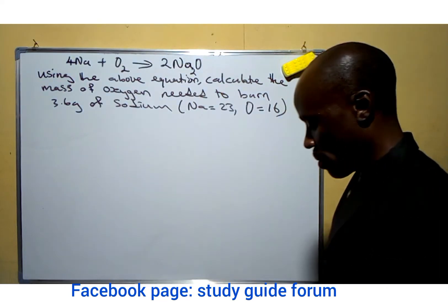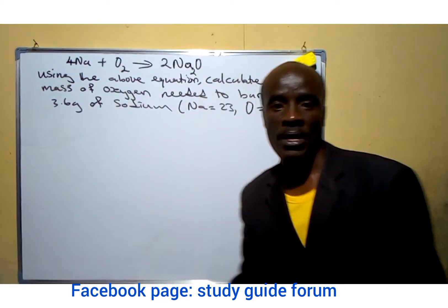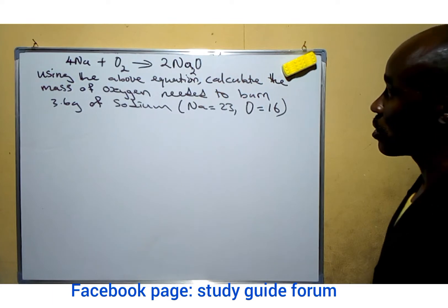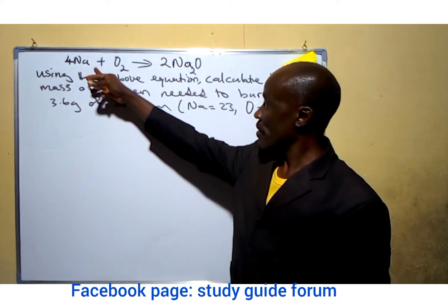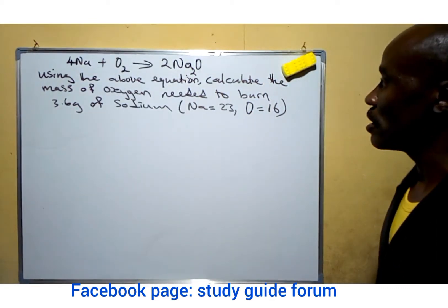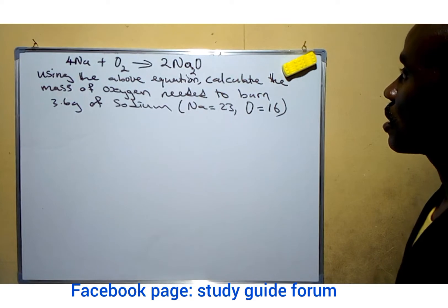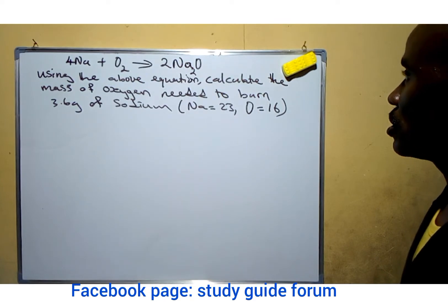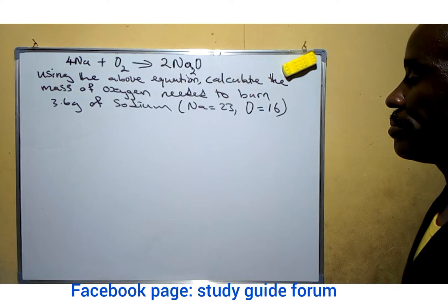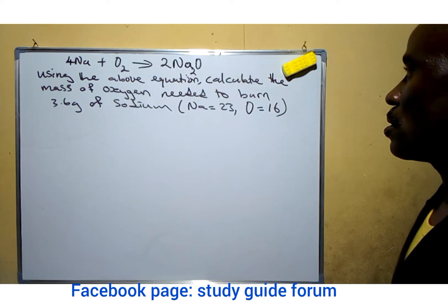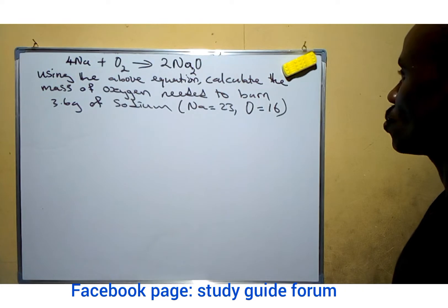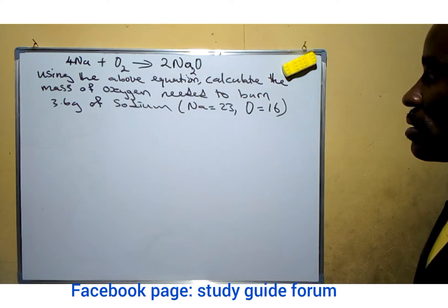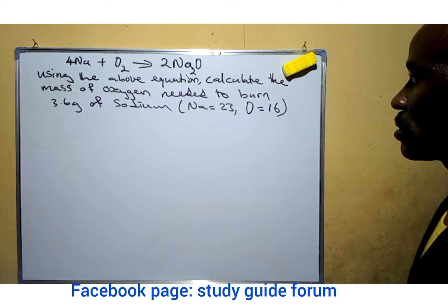Hello everyone and welcome to another exciting time in our classes. Today we're going to be looking at the question here. The question says we have a chemical equation — the reaction between sodium and oxygen to give us sodium oxide. The question says: using the above chemical equation, calculate the mass of oxygen needed to burn 3.6 grams of sodium.